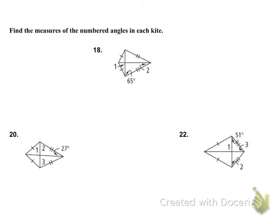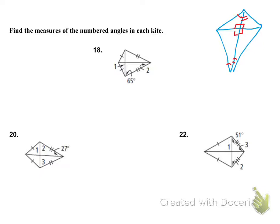Now find the measures of the numbered angles in each kite. Remember, in a kite, all four interior angles where the diagonals meet are 90 degrees. Also, this angle is equal to this angle — the angles are bisected. So angle one equals 90 degrees, no matter what.